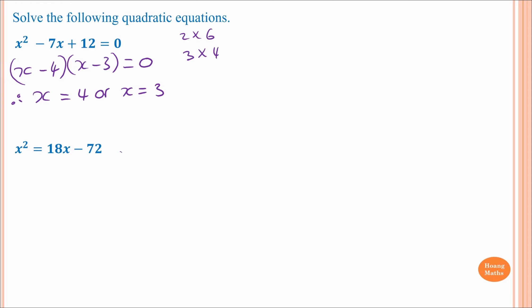Now x squared is equal to 18x minus 72. We need to move everything to one side first — one of the conditions is to make the whole equation equal zero. So it becomes x squared minus 18x plus 72 is equal to zero.